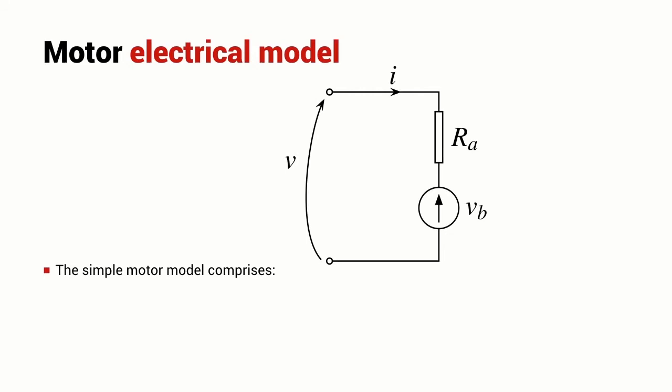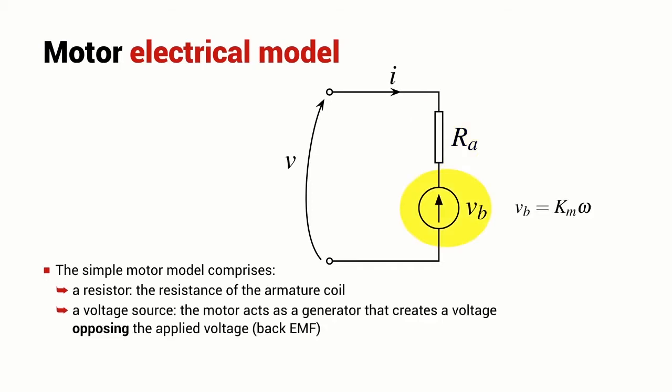A rotary electric motor can be modeled by this electrical schematic. Important components of the model are a resistor, which is the resistance of the armature coil. That's the electromagnet in the rotor. The other component is a voltage source.